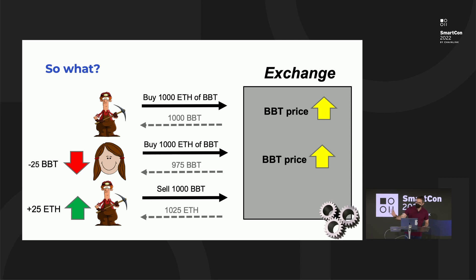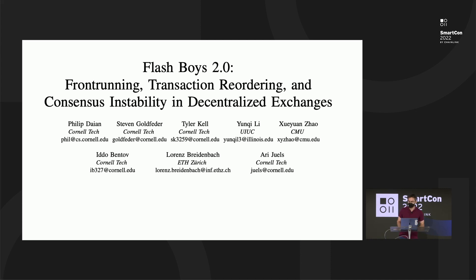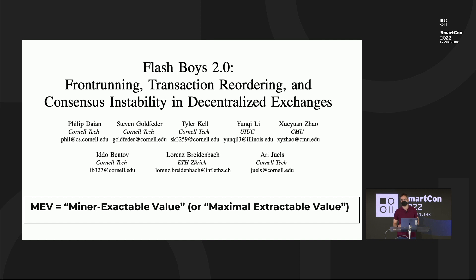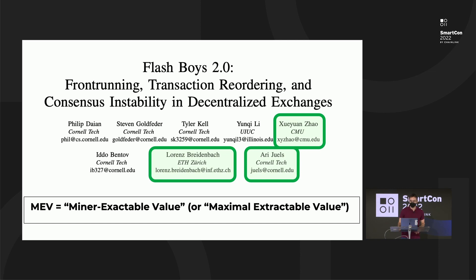As was mentioned in the fireside chat, my group at Cornell Tech published a paper back in 2019 and 2020, spearheaded by my PhD student Phil Daian, in which we coined a term for the opportunities that validators have to essentially take money from users. We called it Miner Extractable Value. Some now refer to it as Maximal Extractable Value, but the acronym is the same — MEV. One interesting thing about this paper, aside from the introduction of MEV, is that three of the eight authors are working at Chainlink Labs now, and another, Steven Goldfeder, you just heard from.